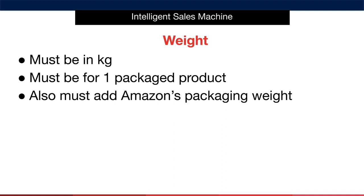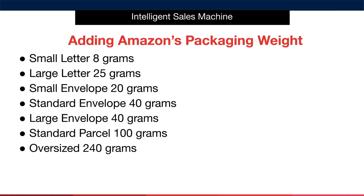This is the weight for one packaged product — in other words, for one sellable unit. When we ship to Amazon and they ship your item out to the customer, Amazon will add some weight to the individual packaged unit weight before they send the item out. We must account for this. The total weight of our item once Amazon adds its packaging is determined by the product size tier that we determined when we looked at the actual dimensions.